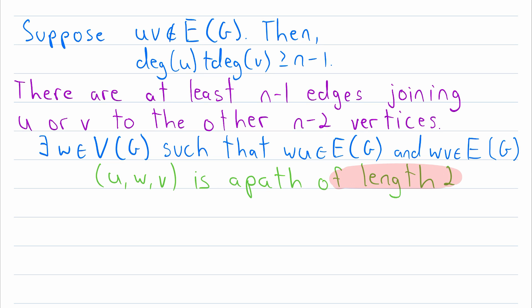Thus, in a graph that fills our condition, every pair of vertices is connected by a path of length 2 or less. Thus, the graph is connected and its diameter is less than or equal to 2.